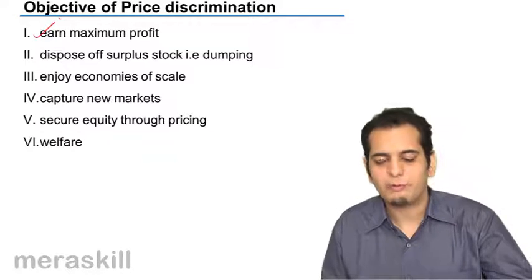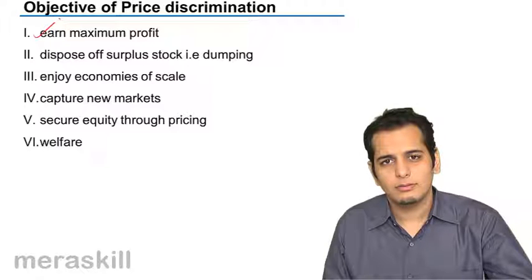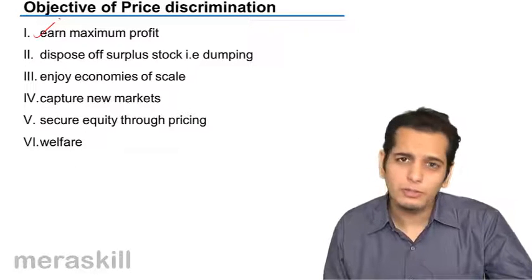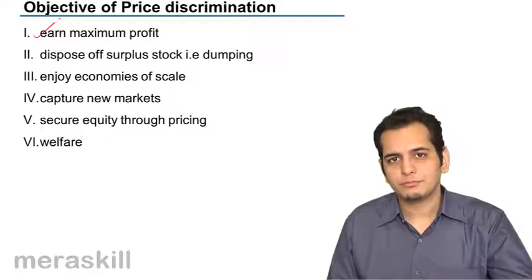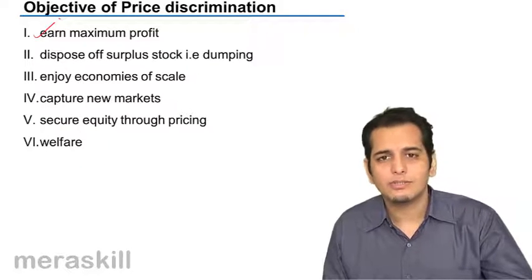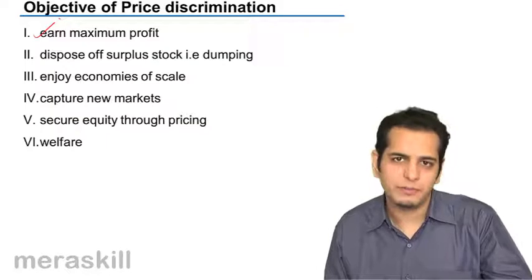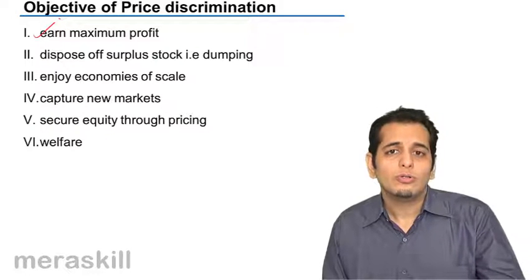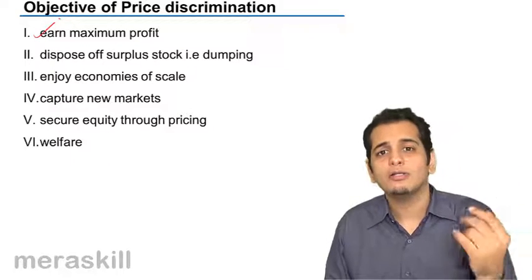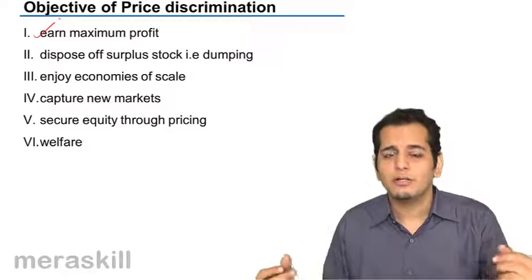First is profit maximization. The objective of every businessman is to earn maximum profits. Maximum profits can be earned by increasing the sales and increasing the turnover. Because in a market you might have poor buyers and you might also have rich buyers. So to get more sales from the poor buyers, you need to sell them at lower prices. And to earn higher profits from the rich buyers, you will have to sell them at higher prices. By this method, you can earn maximum profit.